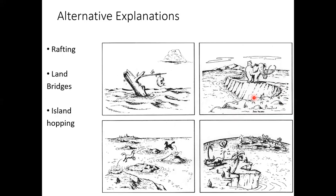Old biogeography books from the 1940s through 1960s put land bridges everywhere to explain how species got from one place to another — between North America and Europe, South America and Africa, Africa and India. There are real land bridges on Earth, but you can't just throw one in as a convenient explanation for why certain things are found where they are.